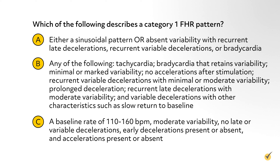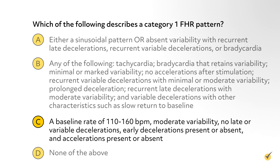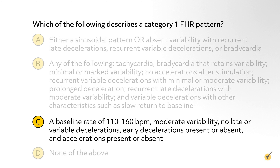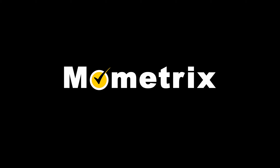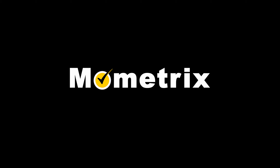A normal baseline fetal heart rate is defined as: A. 100 to 150 beats per minute, B. 110 to 160 BPM, C. 120 to 150 BPM, or D. 130 to 170 BPM. If you chose B, you're correct. That is considered a normal baseline fetal heart rate.